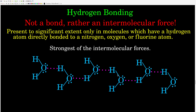The last intermolecular force we're going to talk about is hydrogen bonding. First thing: hydrogen bonding is not a bond — it's an intermolecular force. It's a misleading name. Hydrogen bonding only exists to any appreciable amount in molecules that have a hydrogen atom directly bonded to either a nitrogen, oxygen, or fluorine atom. The hydrogen must be directly attached to one of those three atoms. For example, water — H2O has two hydrogens directly attached to an oxygen, so it exhibits hydrogen bonding between water molecules. Hydrogen bonding is the strongest of these three intermolecular forces.